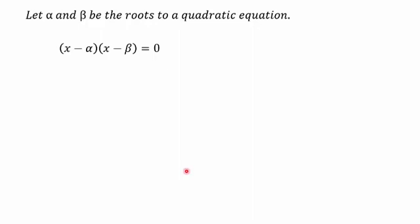This means that we can write (x - α)(x - β) = 0. So here we have our roots α and β.